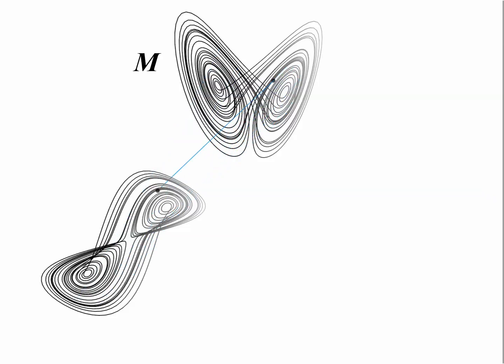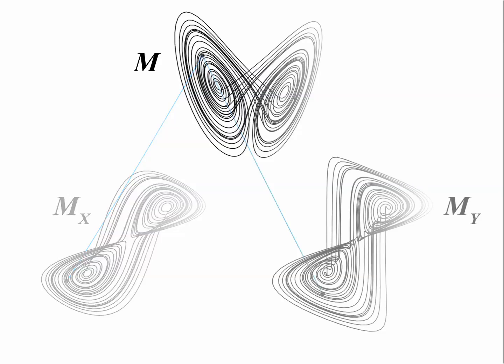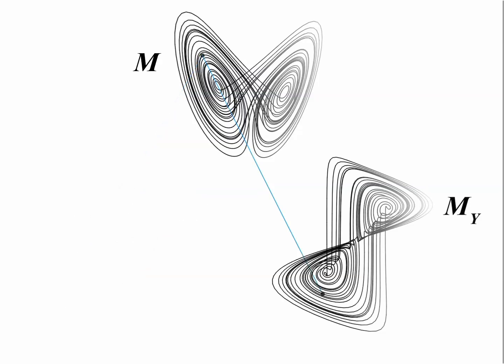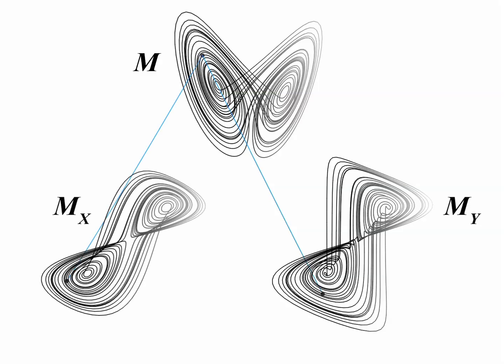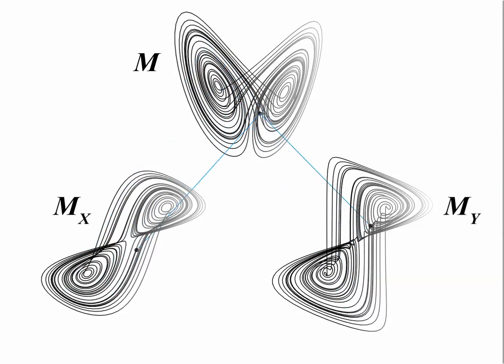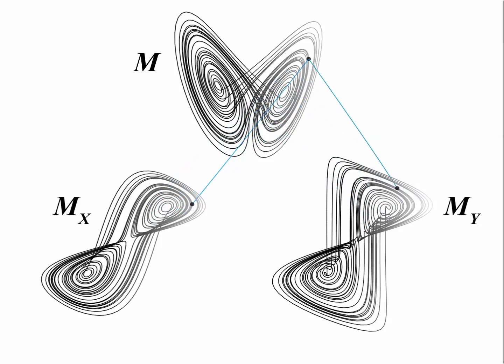This particular reconstruction is based on lags of variable x. If we now do the same for variable y, we find something similar. Here, we see the original manifold M as well as the shadow manifolds Mx and My, created from lags of x and y respectively. Because both Mx and My map one-to-one to the original manifold M, they also map one-to-one to each other.